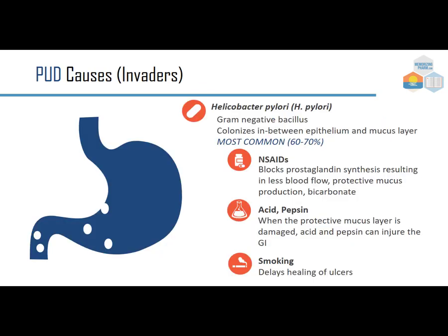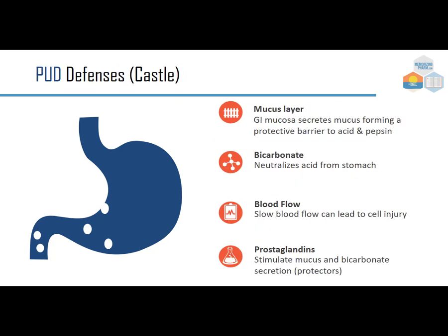Helicobacter pylori is a gram-negative bacillus that colonizes between the epithelium and the mucus layer — it's the most common cause, responsible 60–70% of the time. NSAIDs block prostaglandin synthesis, resulting in less blood flow, protective mucus production, and bicarbonate. When the protective mucus layer is damaged, acid and pepsin can injure the GI system. Smoking delays healing and can increase acidity.